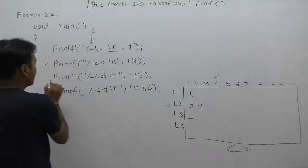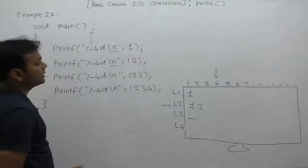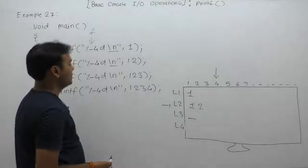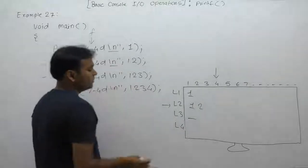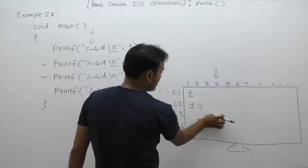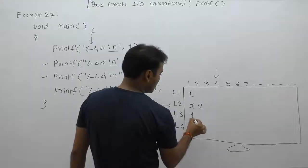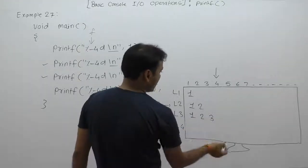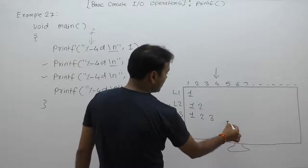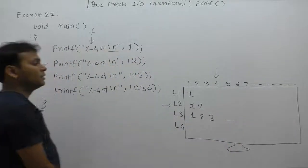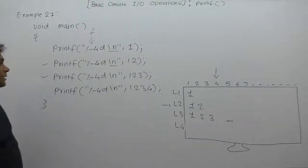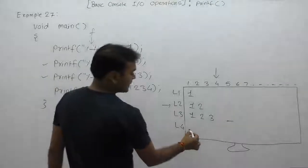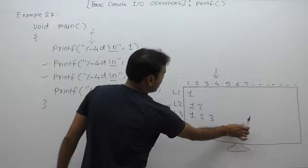In the third case, the number is 123, a three-digit number, but the width value is four. So the value is displayed as 1-2-3 with one space after it, and the cursor will be available on the fifth position. According to slash-n, the cursor moves to the next new line.